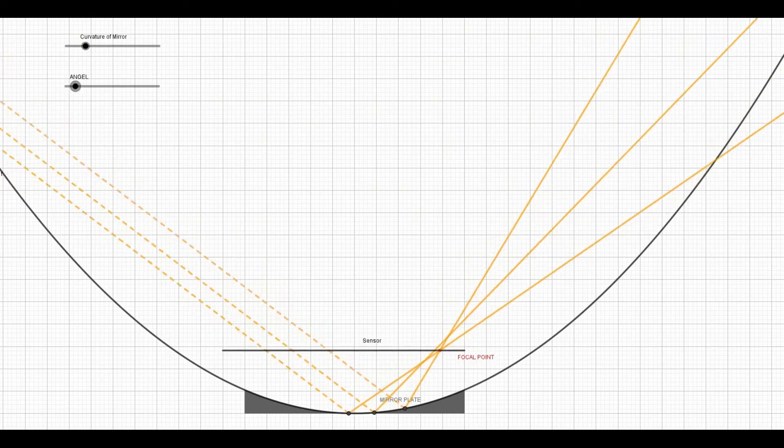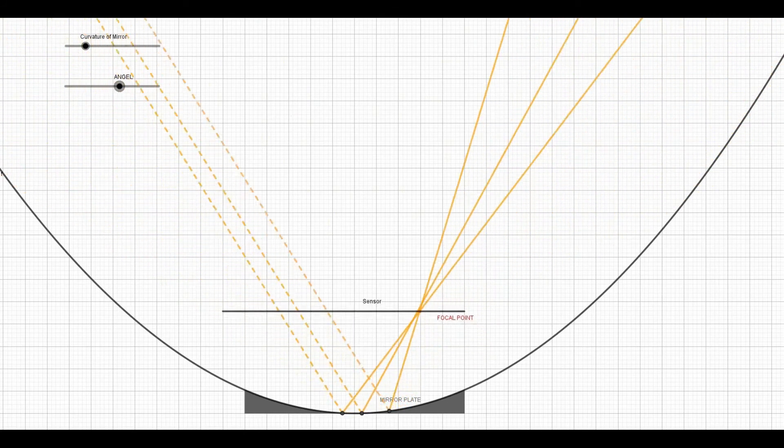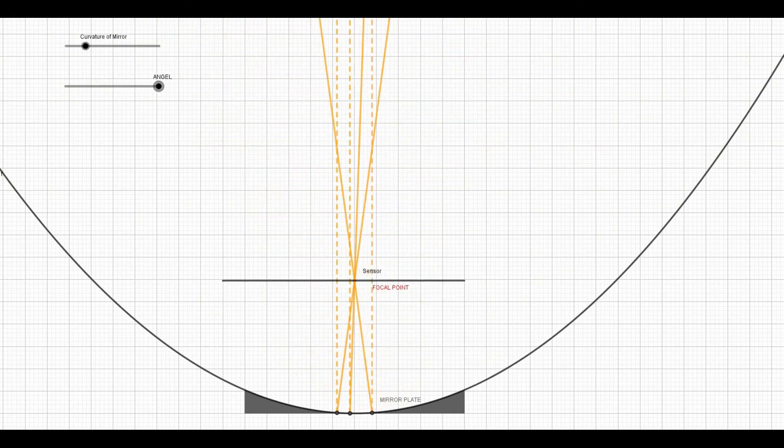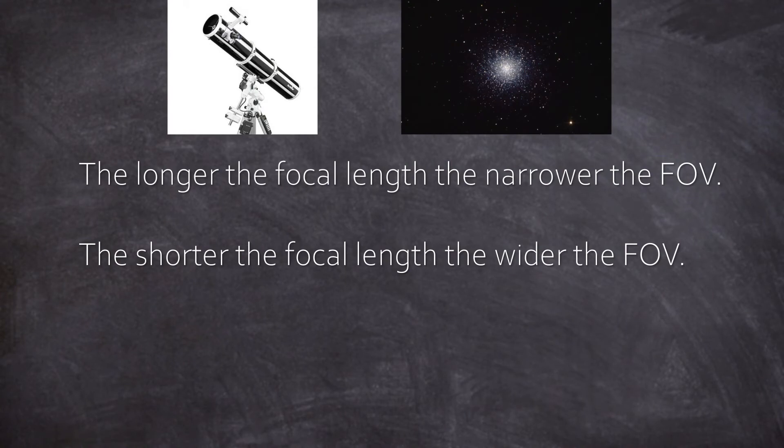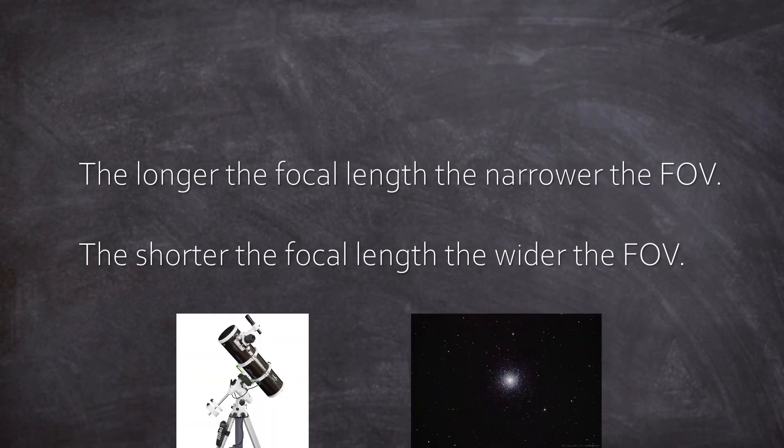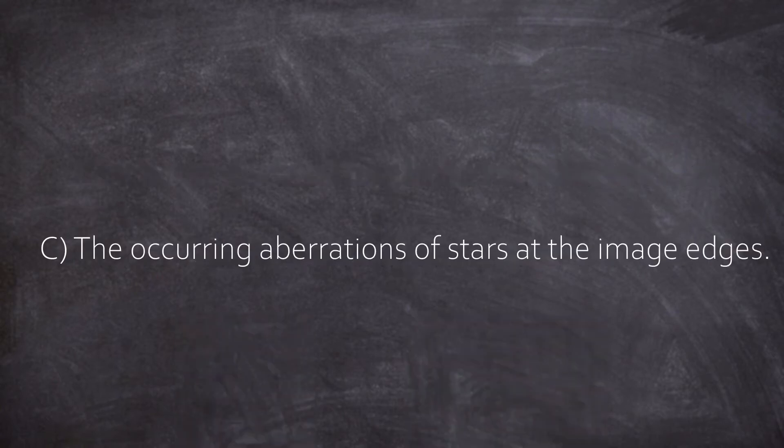So this was the relation between the focal length, the FOV, and the chip size. We experimented with a reflector telescope in this simulation, but the relation is true for all scopes. Okay, the longer the focal length, the narrower the FOV, and the shorter the focal length, the wider the FOV.